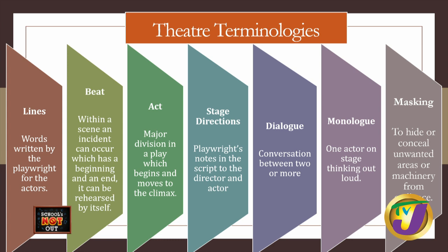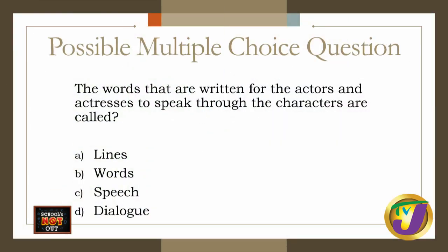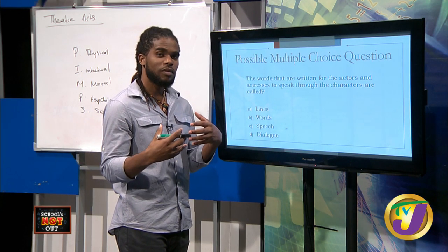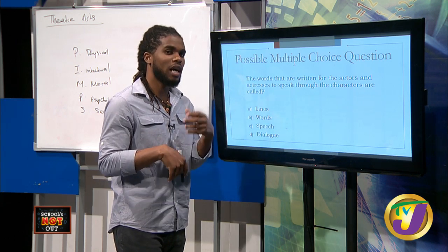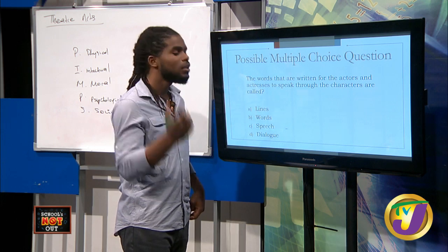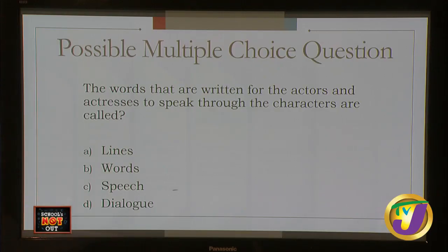Now some practice questions for your CSEC exam. Question one: the words written for the actors and actresses to speak through the characters are called — A: Lines, B: Words, C: Speech, D: Dialogue. Remember, dialogue is characters talking to each other, but the words written on the script for actors to say are called Lines. The answer is A: Lines.